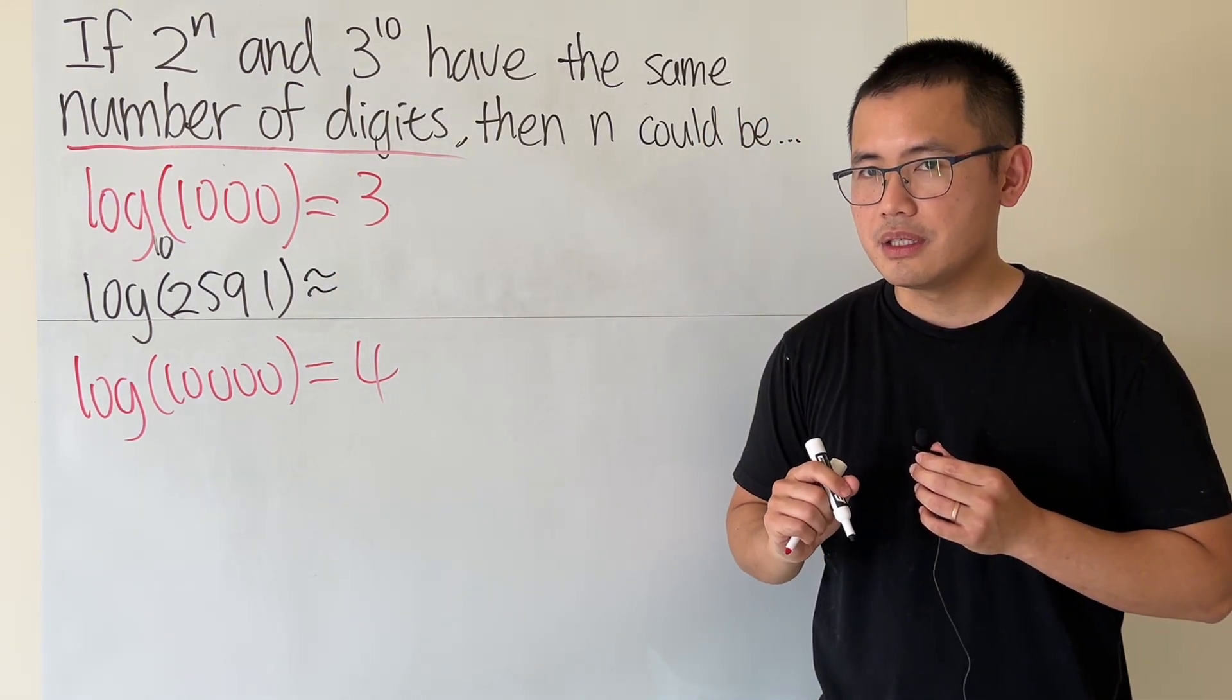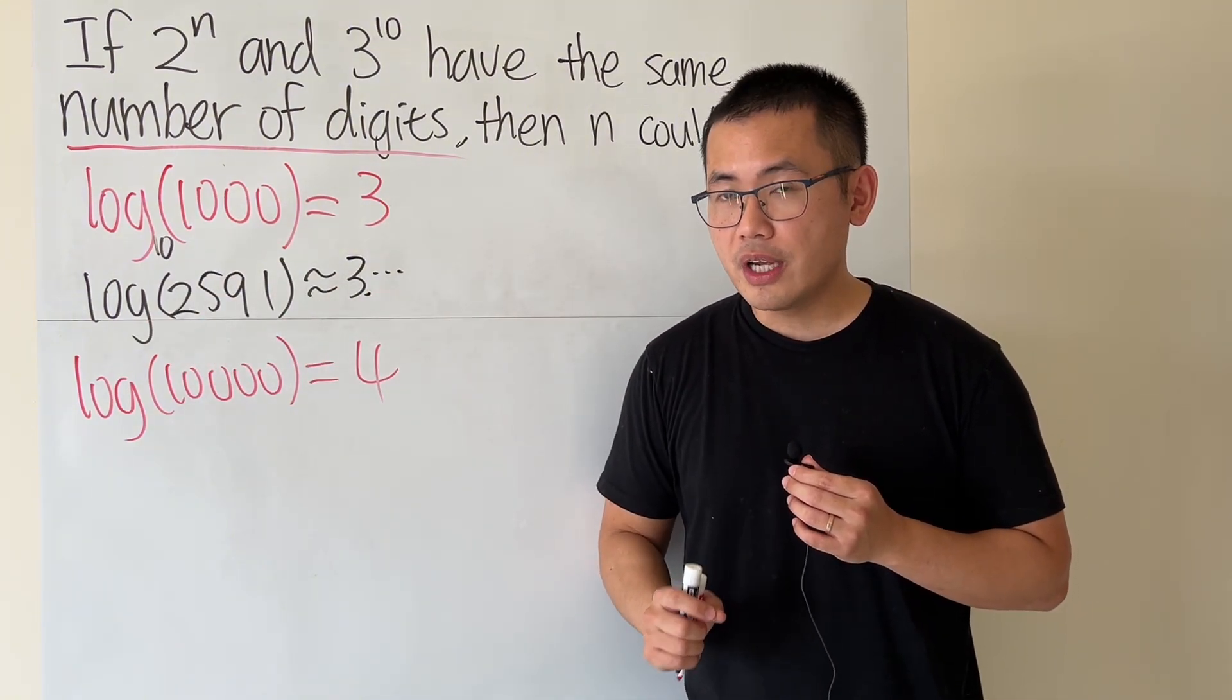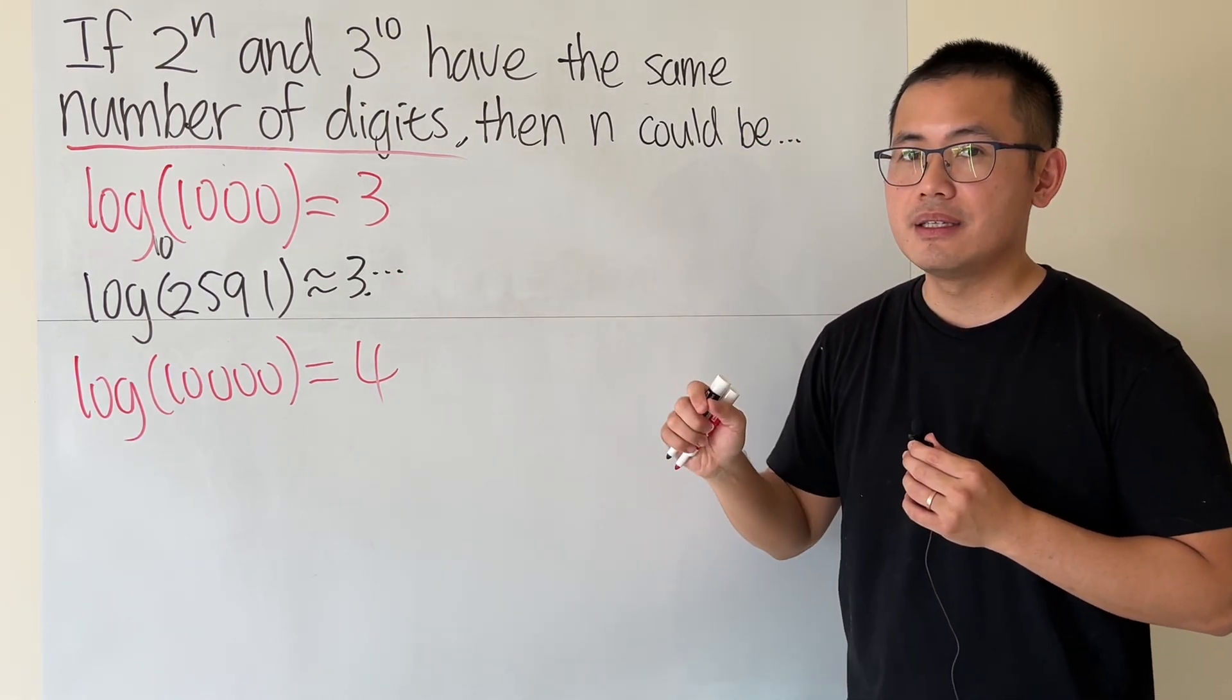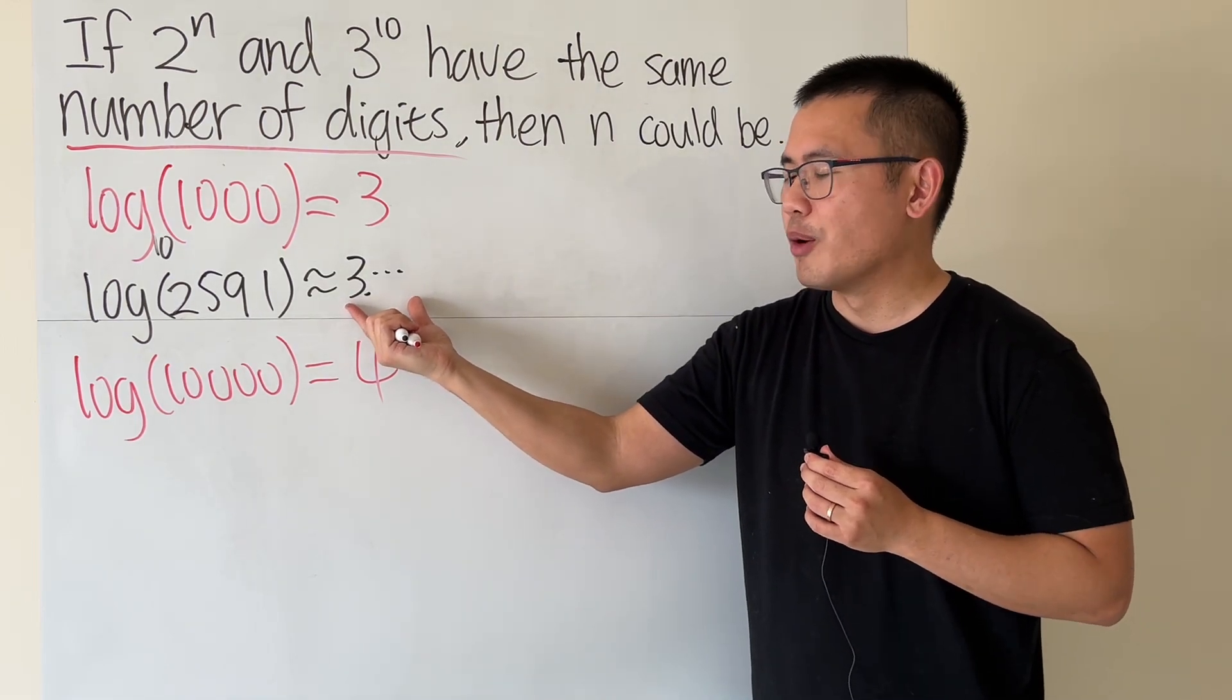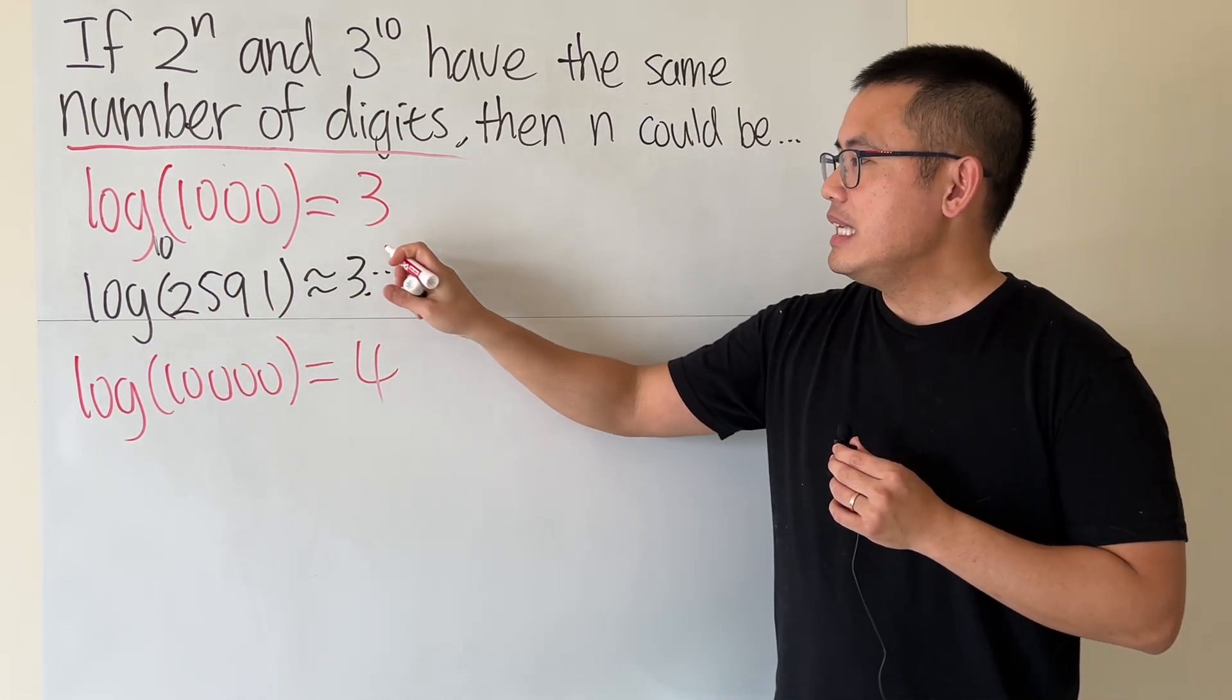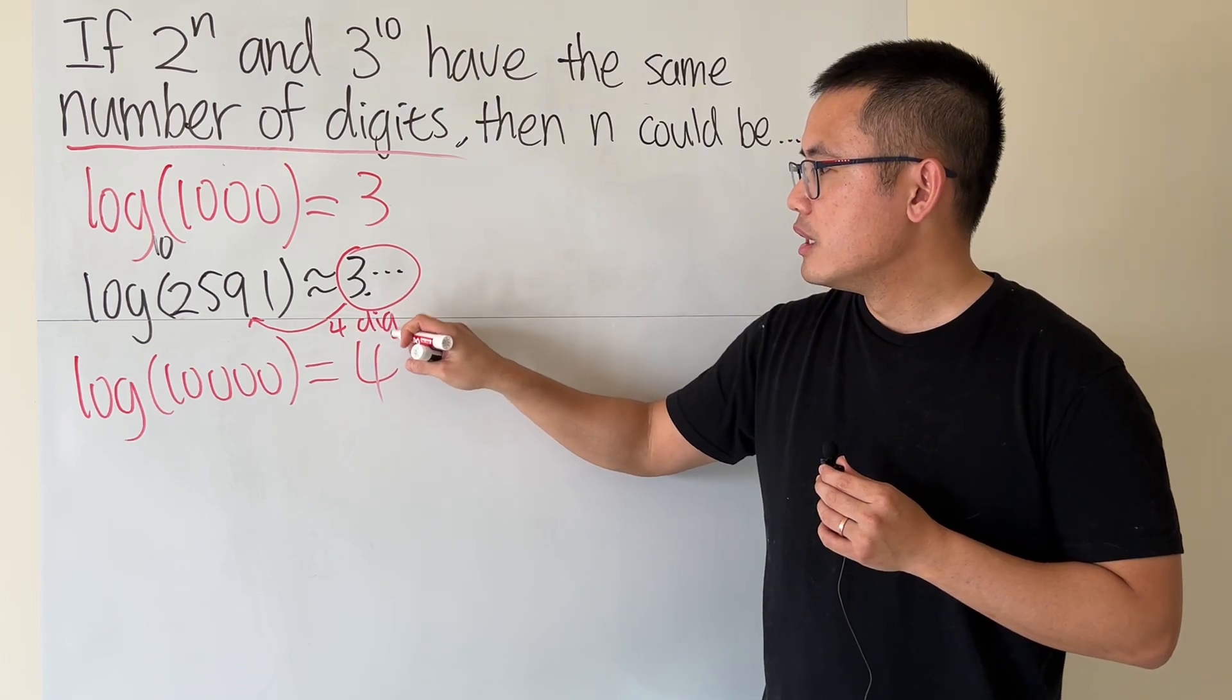Well, the answer is, it must be 3 point something. And the reason is because log is an increasing function. And you see, this number is in between of this and that. So that means the output must be between of this and that. But here, we are not trying to figure out precisely how big this is. We are trying to use the result right here to tell us how many digits that we have right here. And the key is, if we see 3 point something here, that means this number inside must have 4 digits.